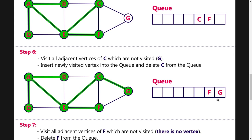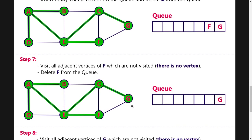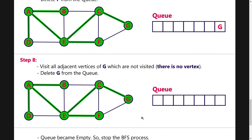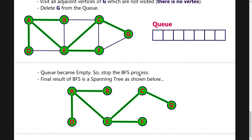Once G is inserted, we move to F. F has no unvisited adjacent nodes, so we delete F. Then we go to G, which also has no unvisited adjacent nodes, so we delete G as well. Now the queue is empty, so we stop the searching algorithm. The final breadth first search spanning tree has been obtained.